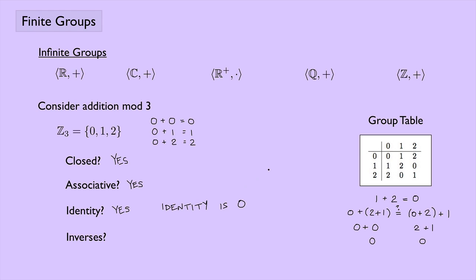Does every element have an inverse? The inverse is the thing that gives you back the identity. The inverse of 0 is 0, since 0 plus 0 equals 0. The inverse of 1 is 2, because 1 plus 2 gives back the identity 0, and 2 plus 1 also gives back 0. The inverse of 2 is 1, since 2 plus 1 equals 0 and 1 plus 2 equals 0. So every element has an inverse.